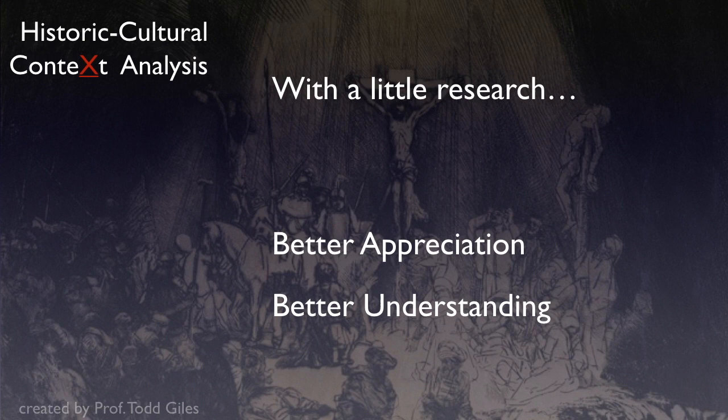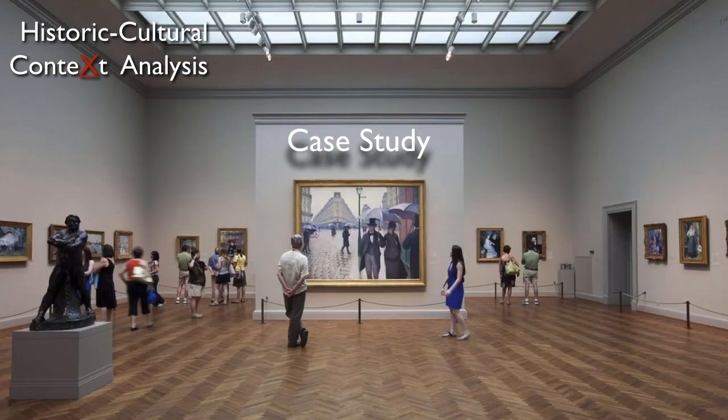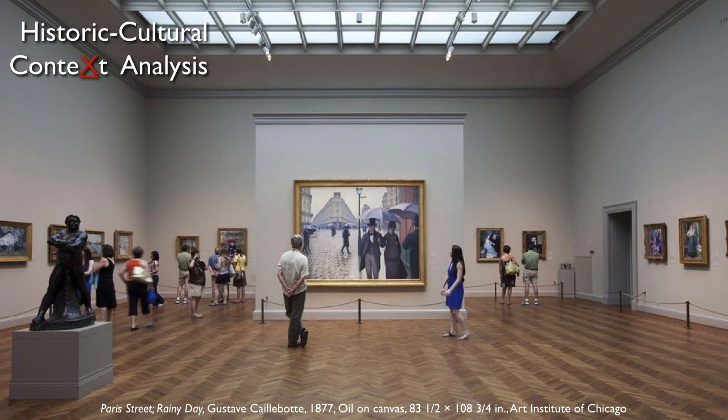Now as we do that, it might seem like this is going to be very hard, but with just a little research online you'll be able to find answers, and this will help you get a much better appreciation and understanding of both the art and the artist. So to help you understand this process about context, let's look at a short case study about this piece of artwork housed in the Art Institute of Chicago, called Paris Street, Rainy Day.